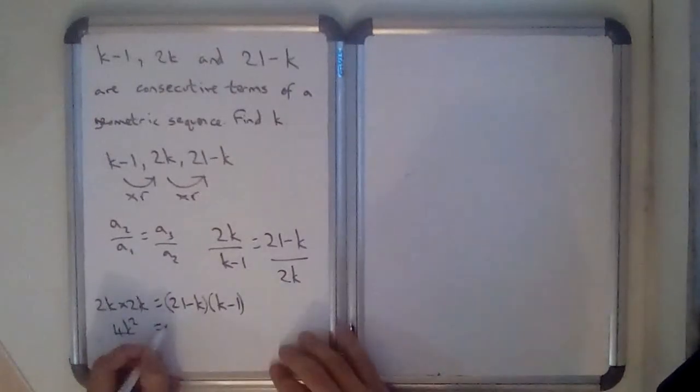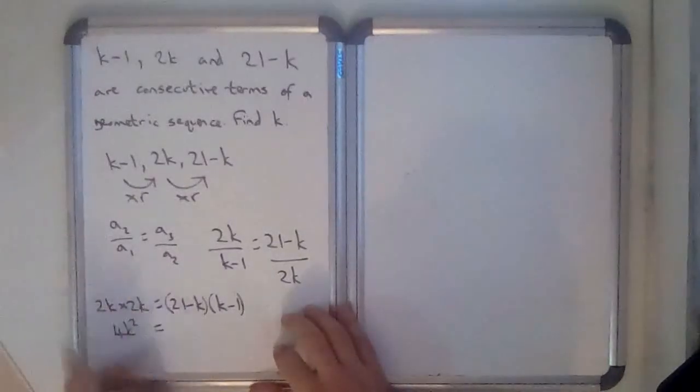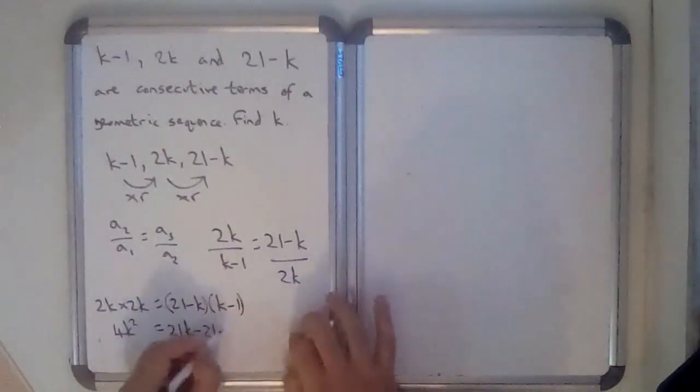...21 times k is 21k. I'm going to write this down. So 21k minus 21 minus k squared.